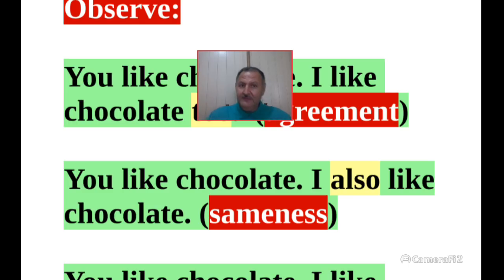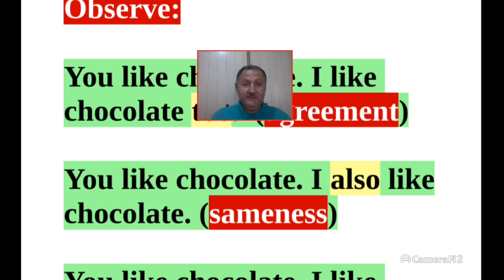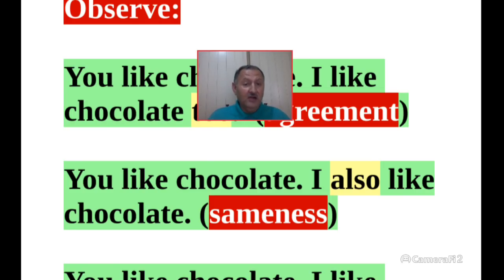Here, I'm not projecting that I agree. Here I'm projecting that the situation — that you like chocolate — is the same situation I have. I also like it, but not necessarily to express agreement. So in this case, 'I also like chocolate' — we're expressing sameness, the same circumstance, the same situation.